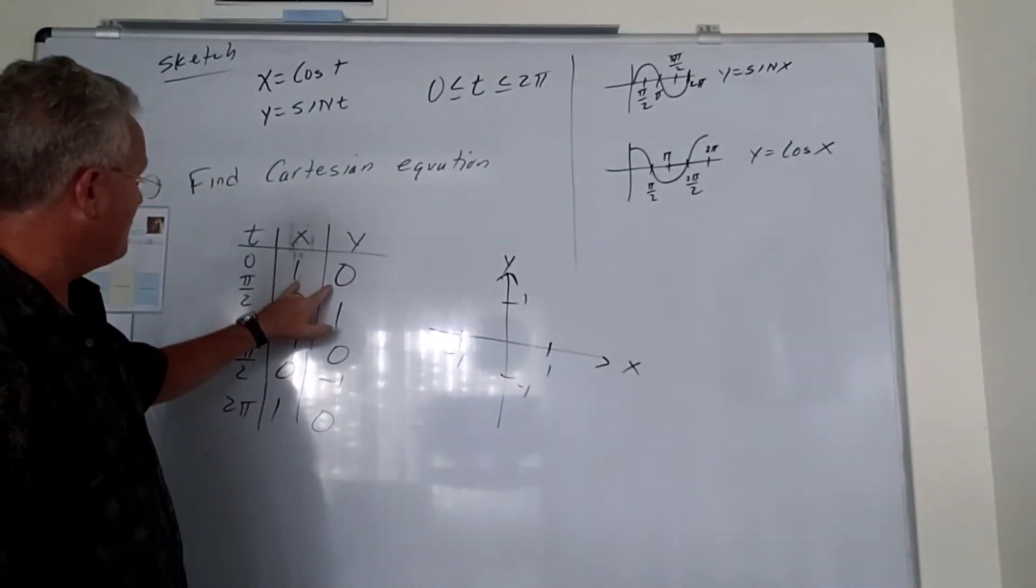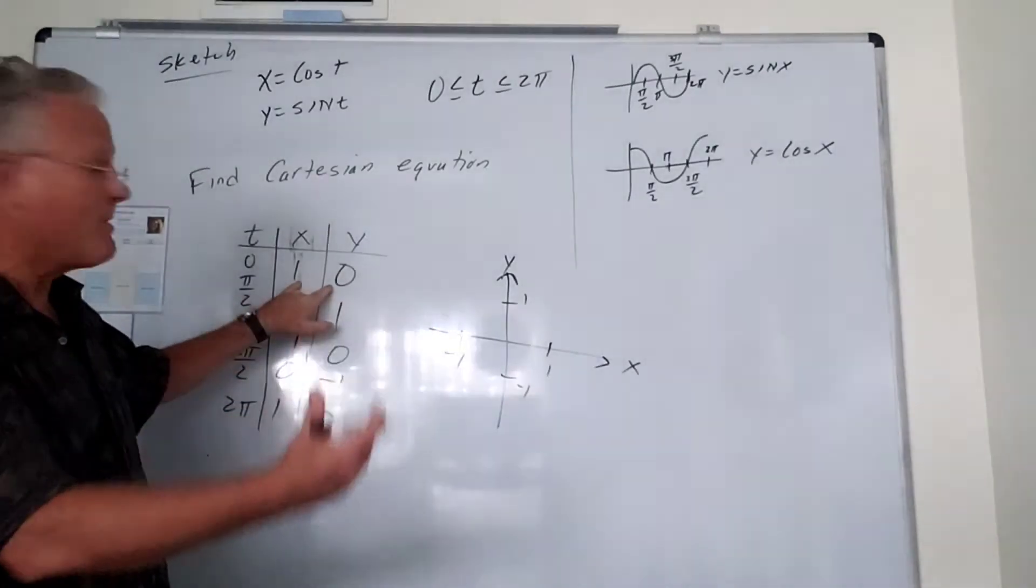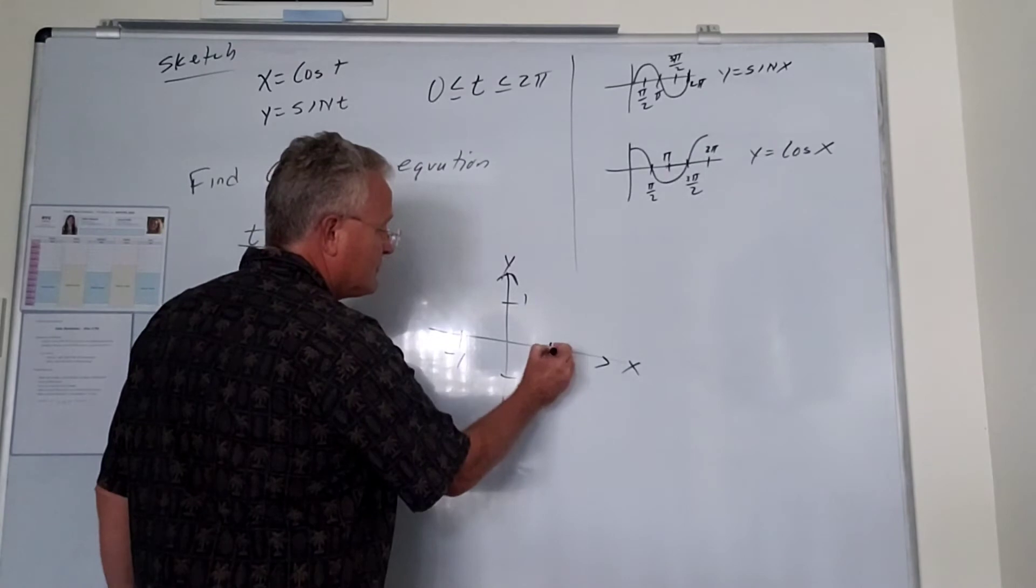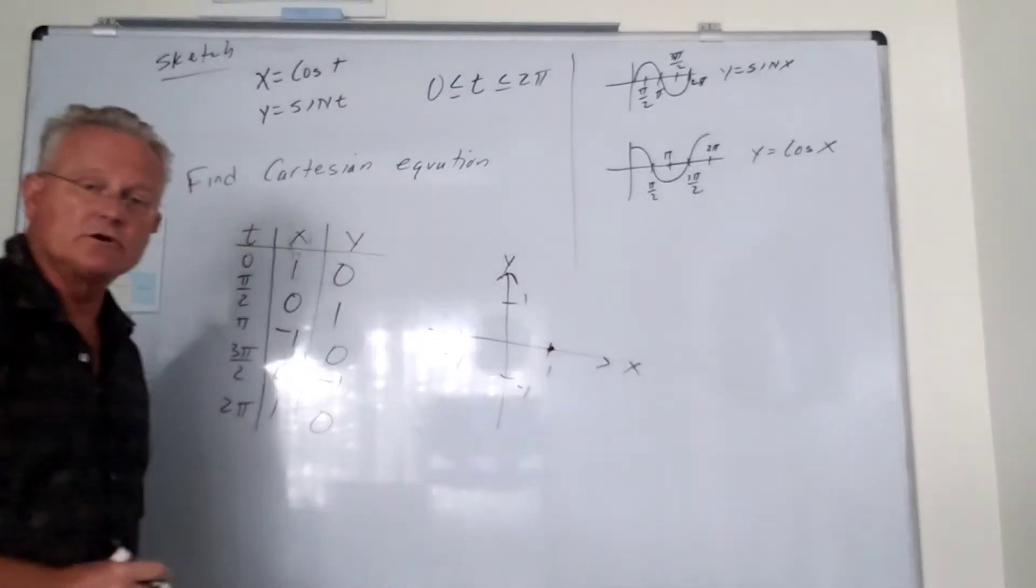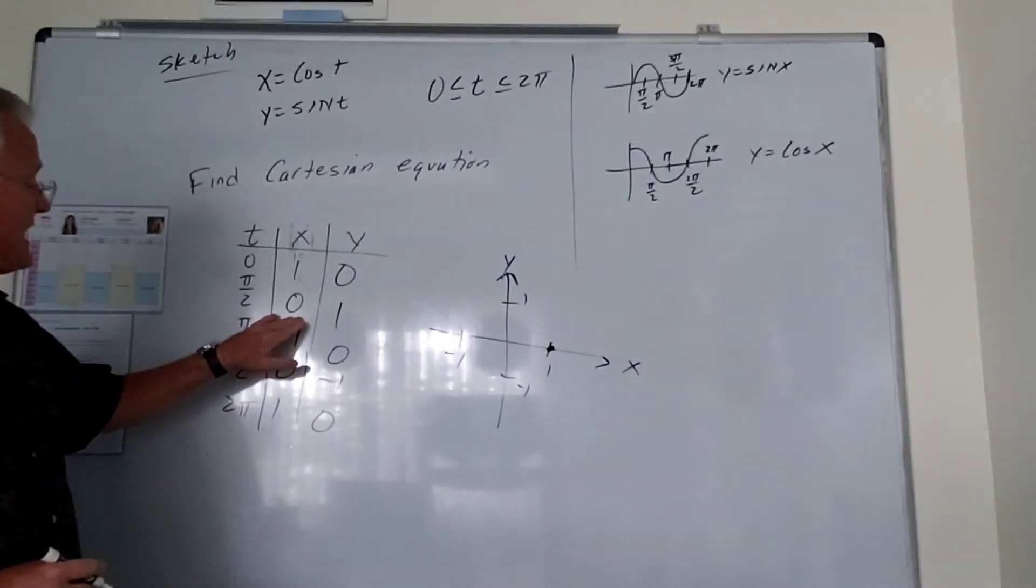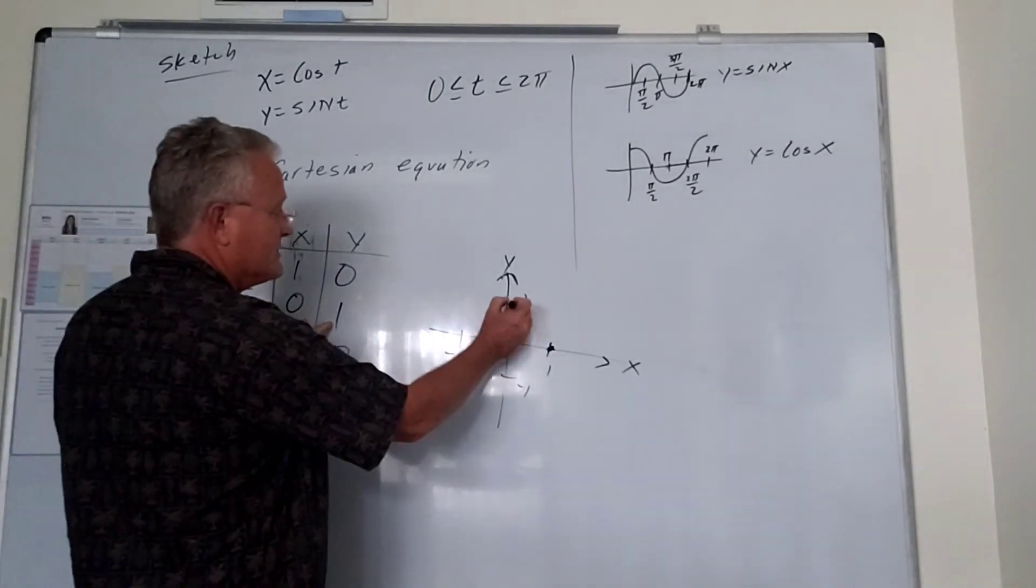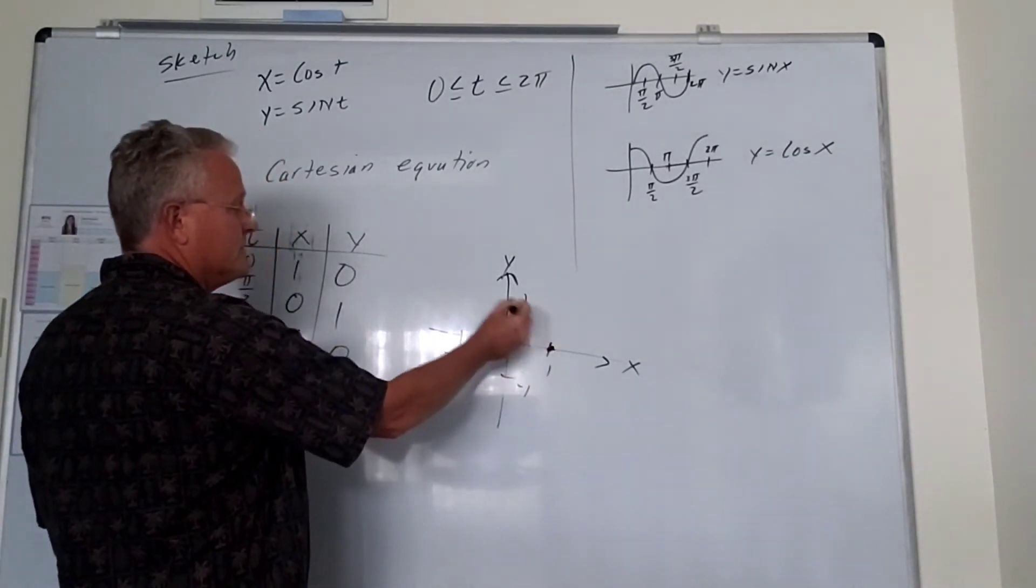So at our first point, when the time is 0, the particle is located at x is 1, y is 0. So at the very beginning, that's where our particle is located. At 90 degrees, when the time is pi over 2, x is 0, y is 1. So we're moving in this direction.